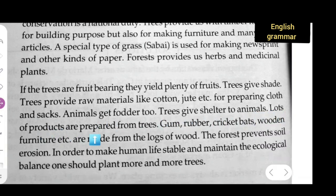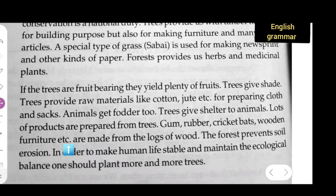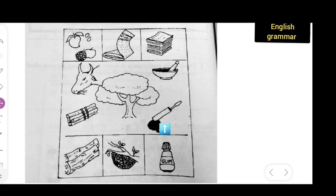Tree gives shelter to animals. Lot of products are prepared from trees. Gum, rubber, cricket bats, wooden furniture, etc. Y'all can see a wooden furniture over here. Y'all can see a gum over here. This is a wooden, woods. And this is a wooden footbed.